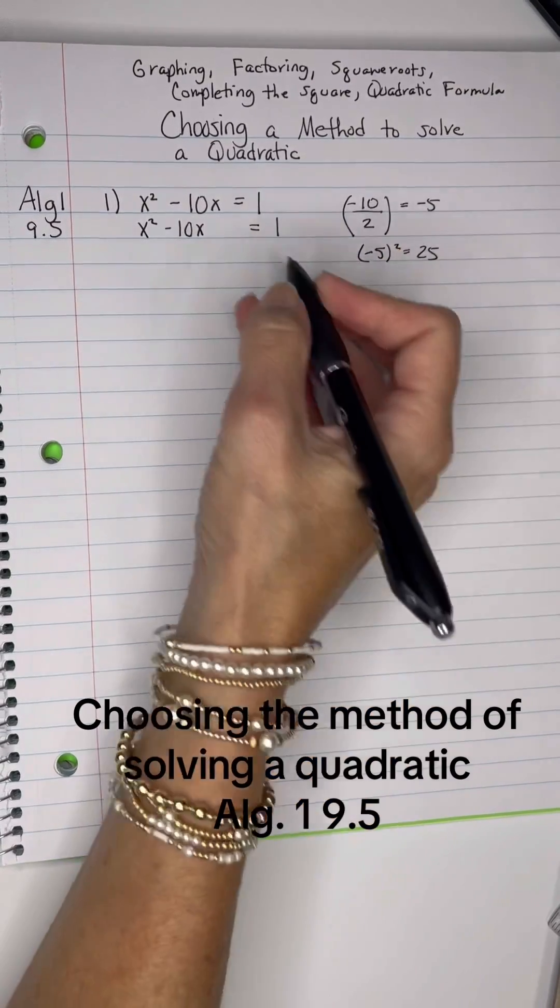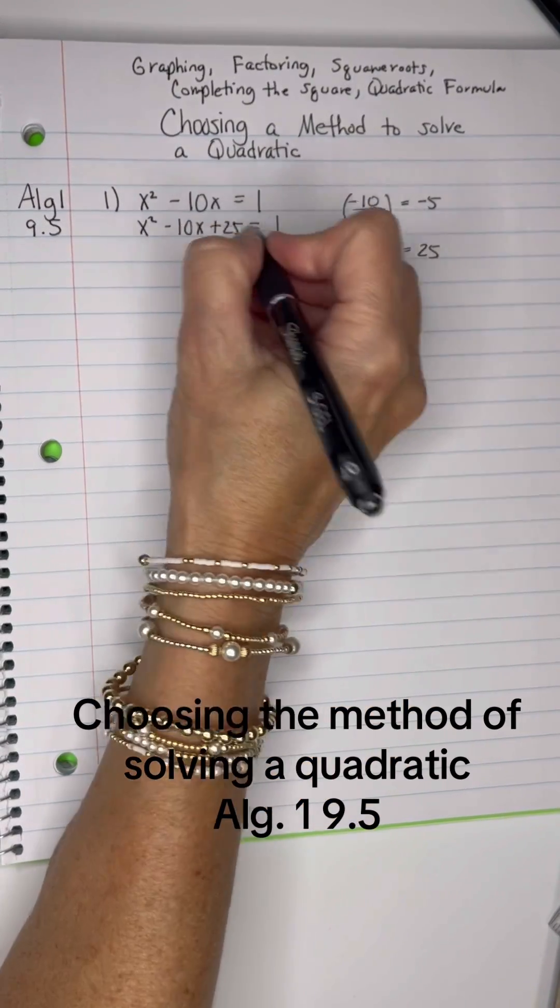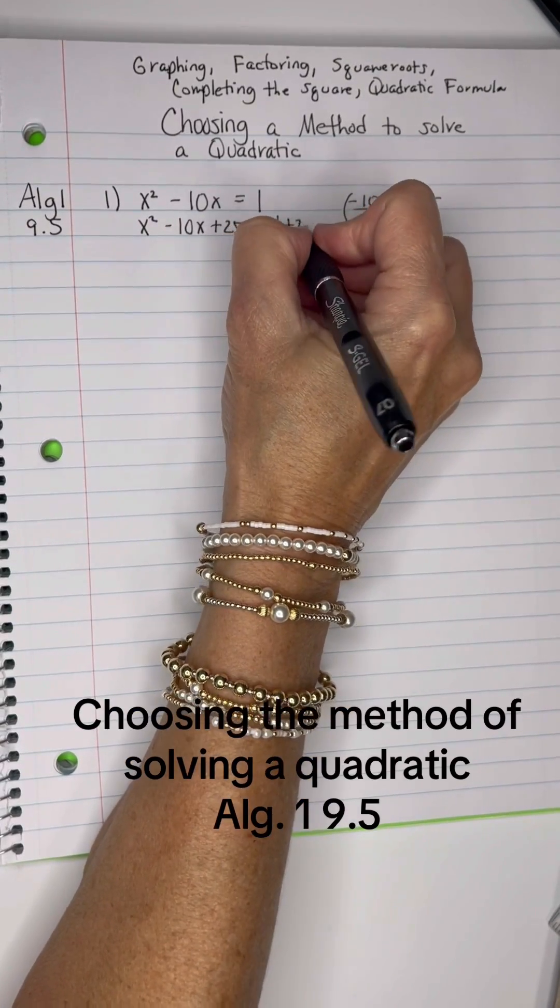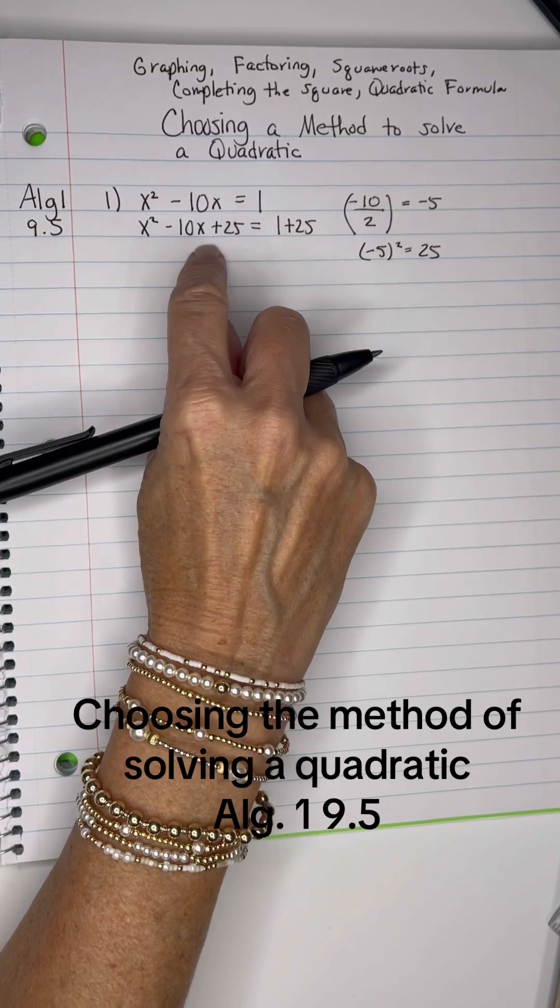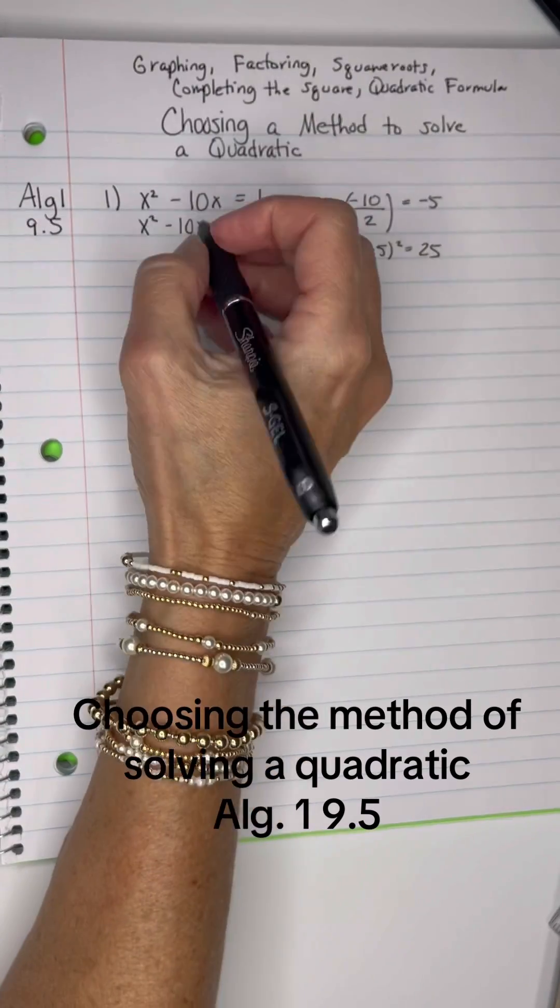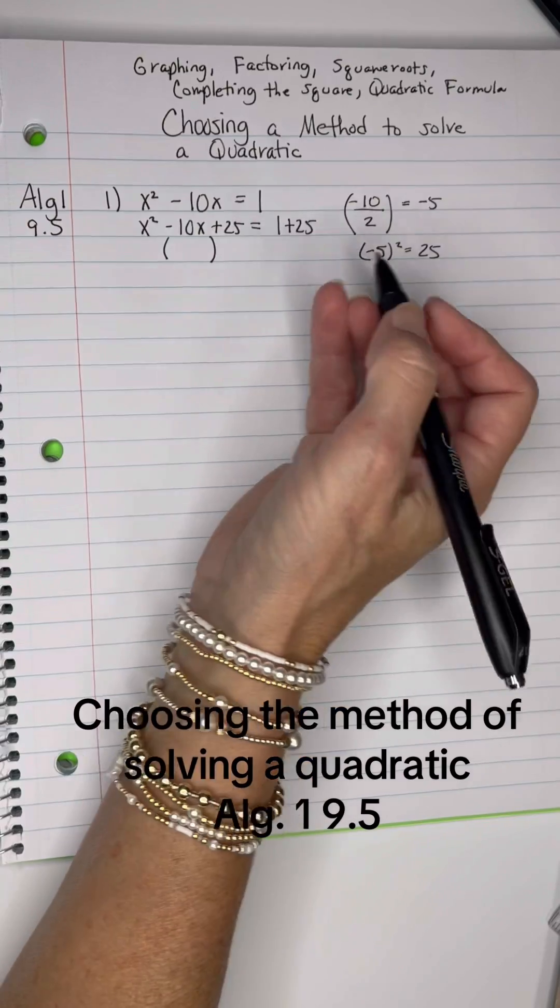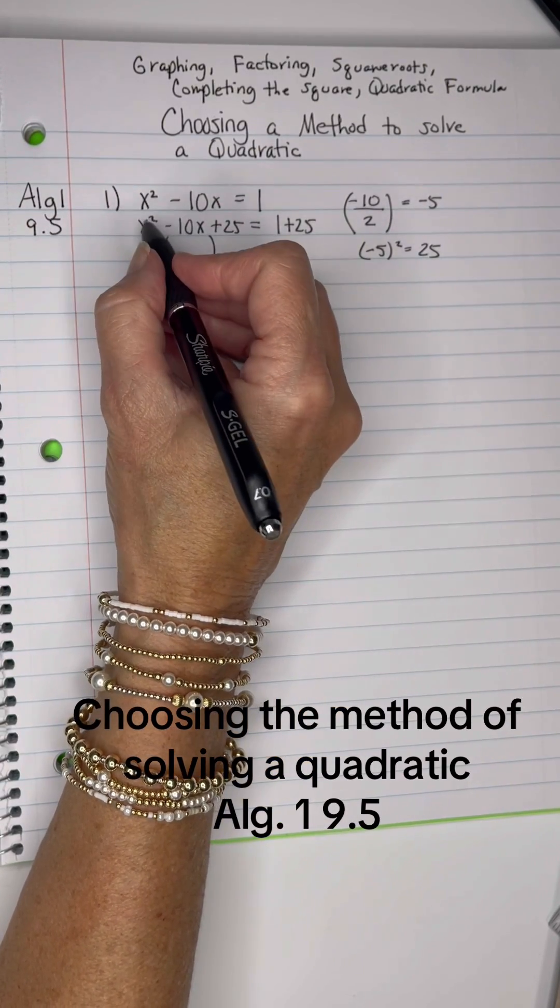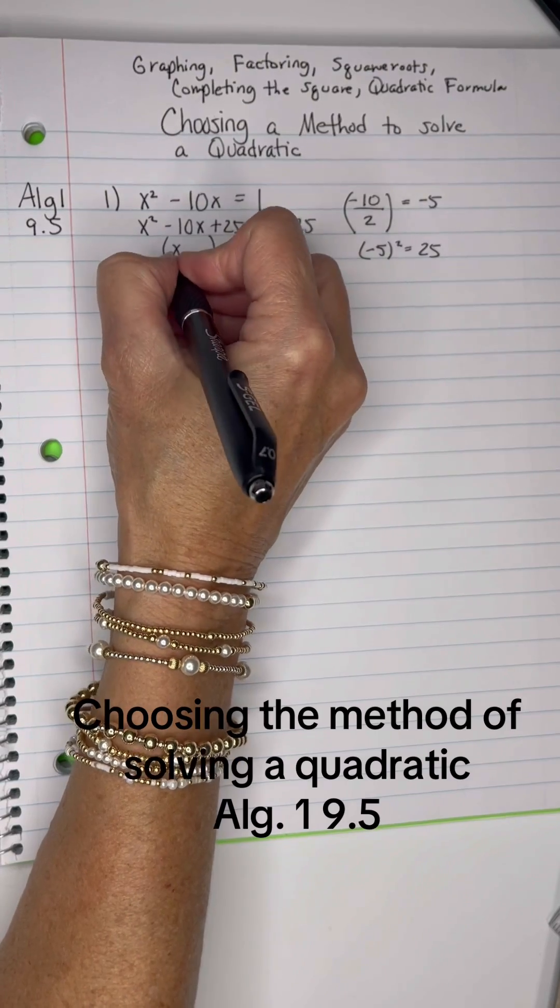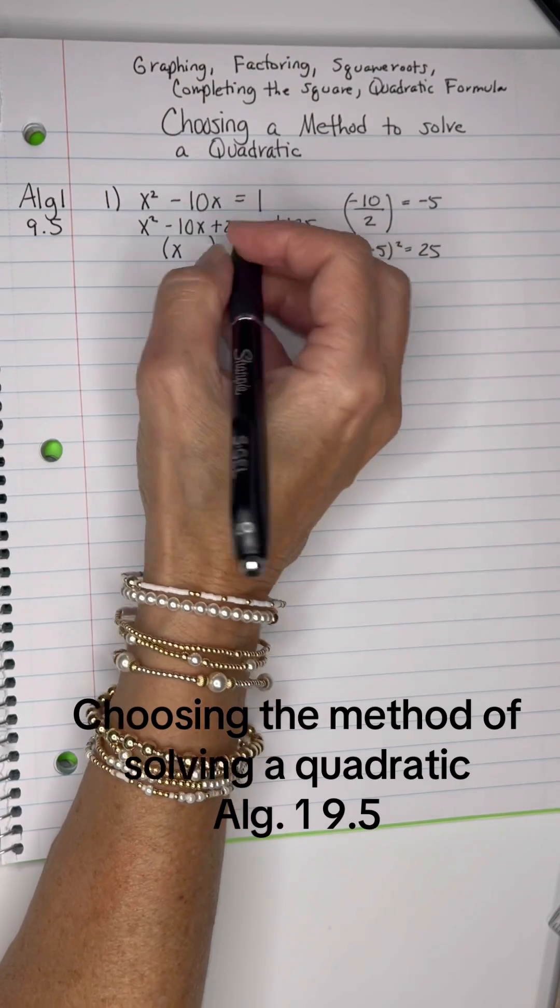And that creates us a perfect square that I can add to both sides of the equation, and the reason I want to do that is so that I create a perfect square trinomial that we've learned to factor really fast. The perfect square trinomial – the first term will be the square root of x², which is x, and the last term will be the square root of 25, which is 5.